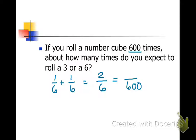In this case, when solving proportions, we're going to make an equation that says, since cross products are equal, 6X is equal to 1200. We can divide both sides by six and find that we would expect to roll a three or a six 200 times.